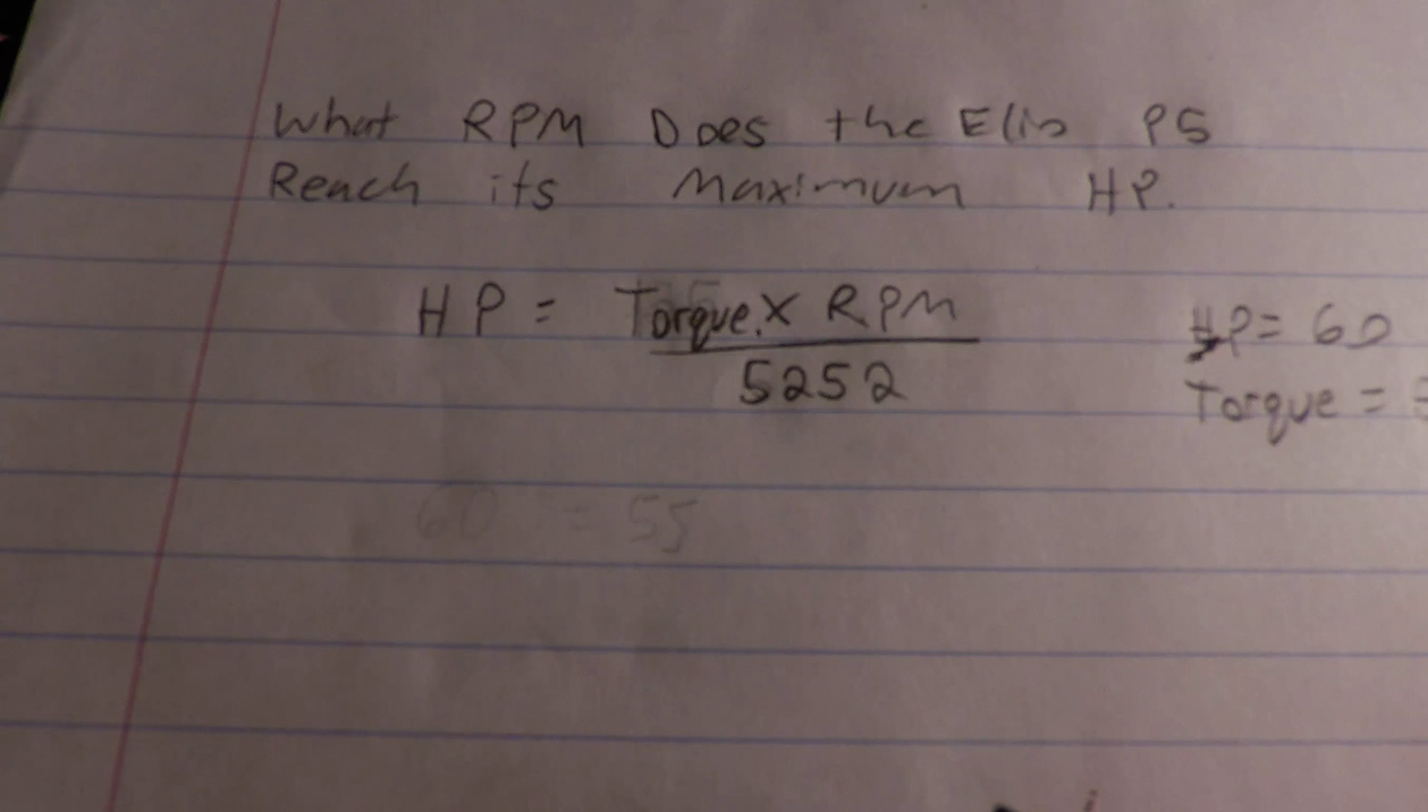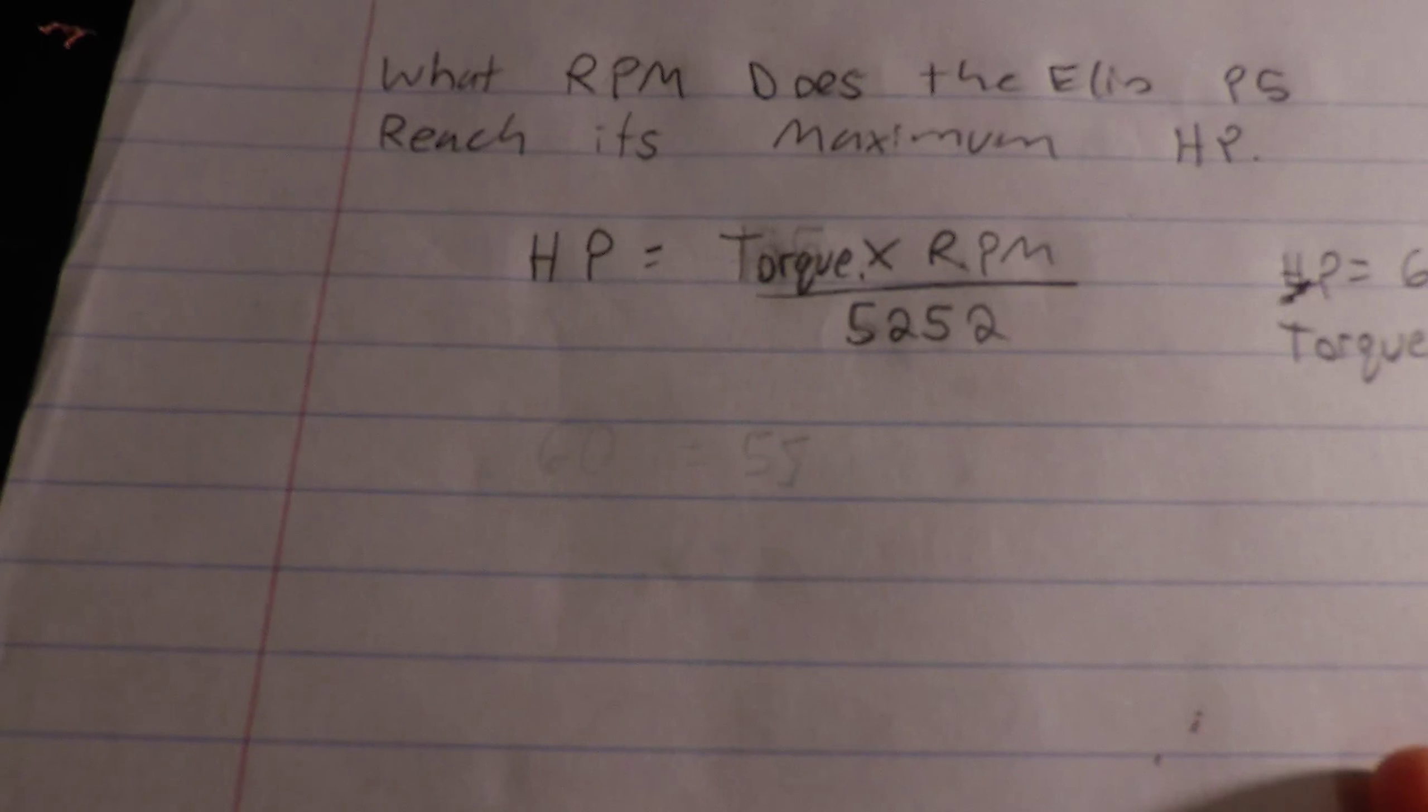What RPM does the Elio P5 reach as maximum horsepower? Well, the horsepower equation is torque times RPM divided by 5252.